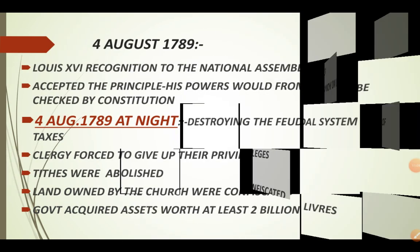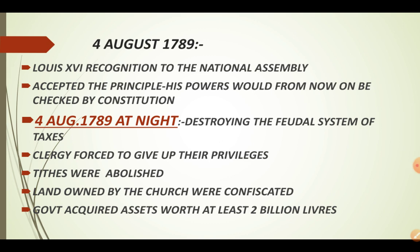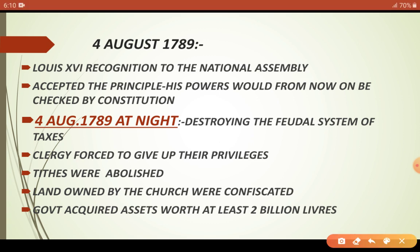Due to the countryside rumors and peasant attacks, and the pressure from the Third Estate, King Louis XVI was forced on 4th August 1789 to accept the National Assembly. He also accepted that his power would henceforth be limited by a constitution — meaning the king's powers were restricted.